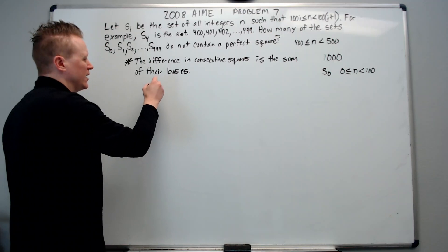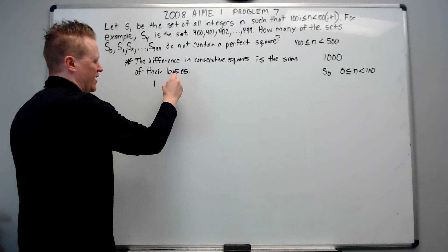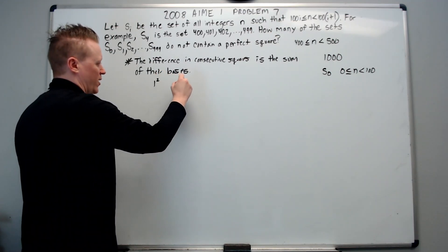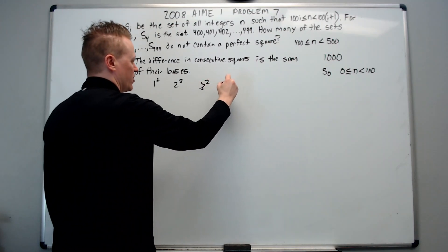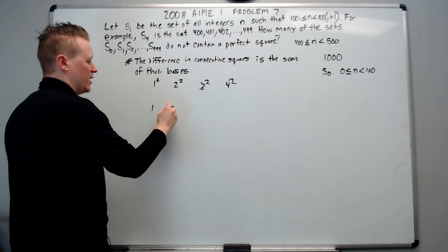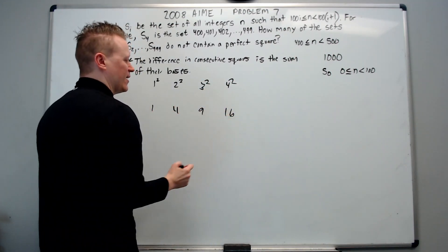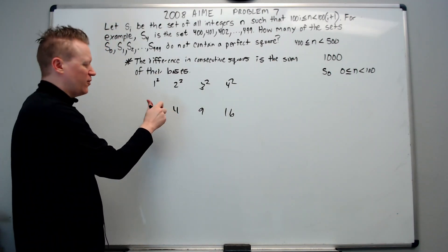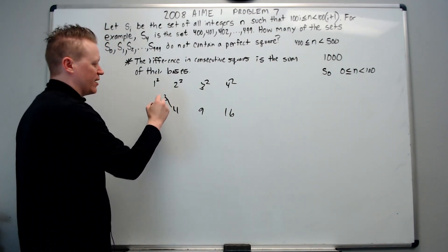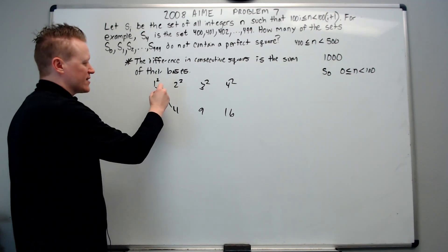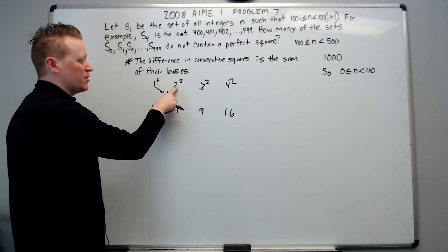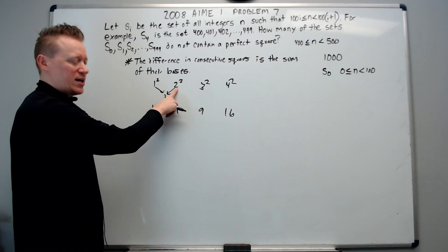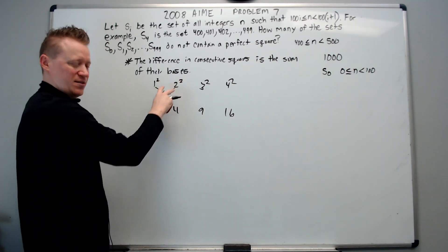To see why this works, just a quick review for those of you who might not know this. Most of you probably do. If you take 1 squared, 2 squared, 3 squared, 4 squared, and so on, you get 1, 4, 9, and 16. How far apart are 1 and 4? They are 3 apart. Notice that 3 is the sum of 1 and 2, the bases of the perfect squares. 1 plus 2. Ignoring the squared part. The base only.